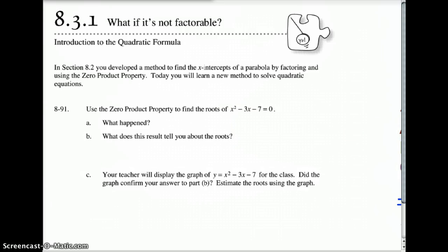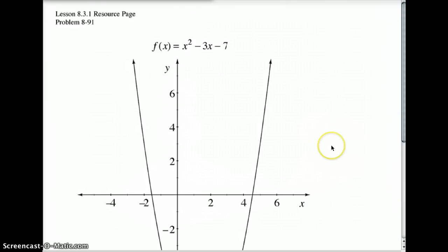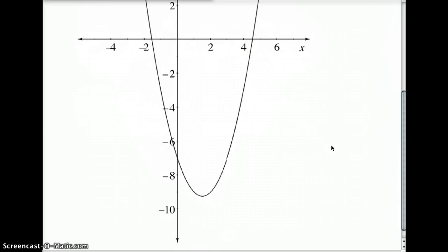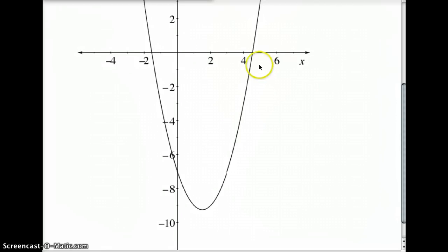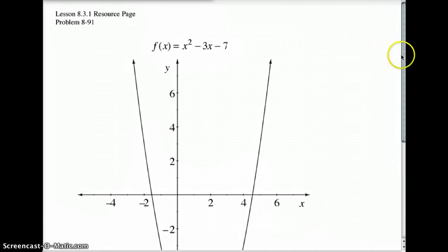Well, in fact, no it doesn't. In fact, I'm going to show you what the graph of this looks like. Here's the graph of it. You can clearly see it crosses the x-intercepts somewhere around 4.5, give or take, and somewhere around negative 1.5, give or take. Is it exactly there? Well, let's find out. So here's the graph. It does work. It does cross the x-intercepts. The problem is, it is not factorable. So what do we do?